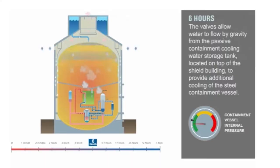that caused doubt on the predecessors that are still in operation. The valves allow water to flow by gravity from the passive containment cooling water storage tank located on top of the shield building to provide additional cooling of the steel containment vessel.